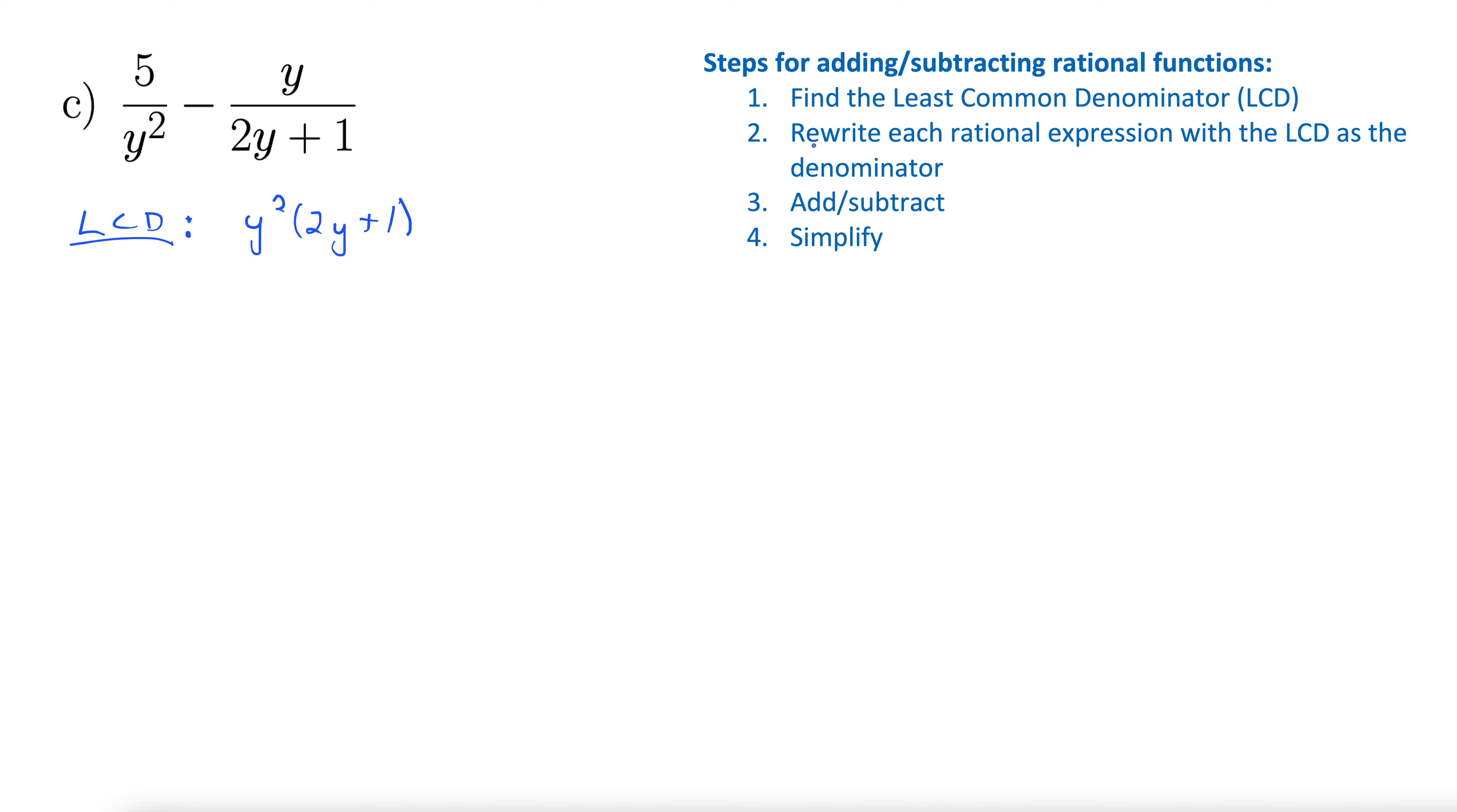Now, next step, rewrite each rational expression with the LCD as the denominator. So this is the part where we multiply by special versions of 1. So we have 5 over y squared. We have the y squared, but we're missing 2y plus 1. I will multiply by 2y plus 1 over 2y plus 1. Then we have minus y over 2y plus 1. Now, in the second denominator, we're missing the y squared term, so I will multiply by y squared over y squared. Remember, whatever you do for the denominator, you have to do it in the numerator as well, so you're just actually multiplying by 1.